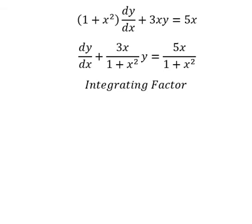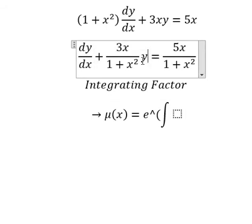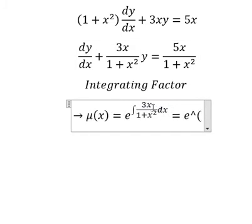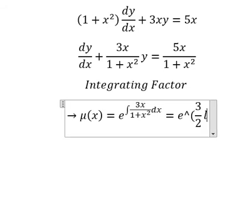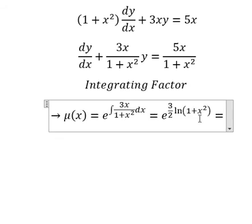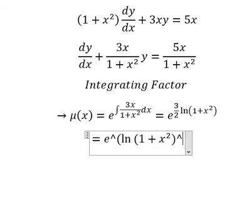So we need to find μ(x), which equals e to the power of the integration. We see that the coefficient next to y is used for the integrating factor. The integration of this gives us (3/2) ln(1 + x²). So I will put this inside the natural log, giving us e to the power of ln(1 + x²) to the power of 3/2.